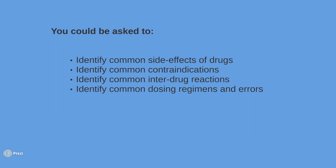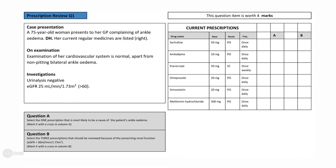Let's put this into context and move on to some example questions. Here's our first scenario: a 75-year-old woman who presents to her GP complaining of ankle edema. Examination of her cardiovascular system is normal apart from non-pitting bilateral ankle edema. Her urinalysis is negative for proteinuria, hematuria, leukocytes, and nitrites. Her current prescriptions are listed in the table. Question A asks you to identify the medication most likely to blame for the patient's ankle edema. Question B asks you to identify the three prescriptions which should be stopped or used with caution if the patient's kidney function deteriorates.